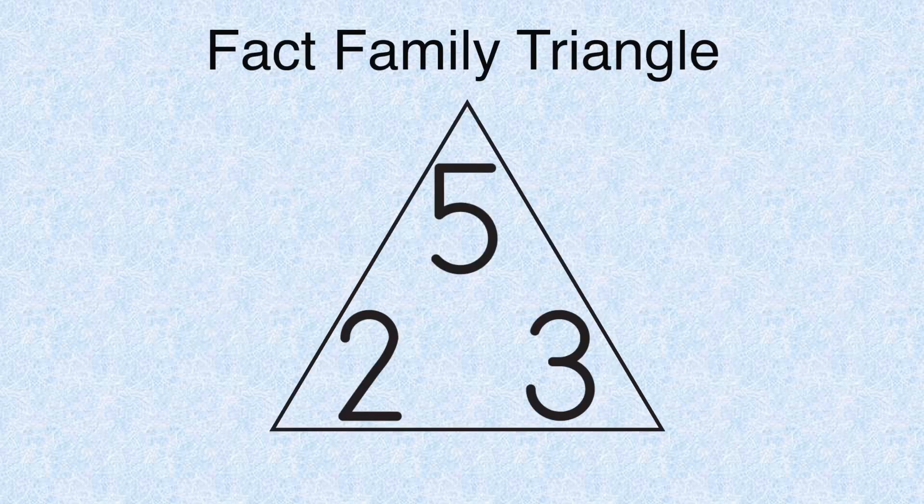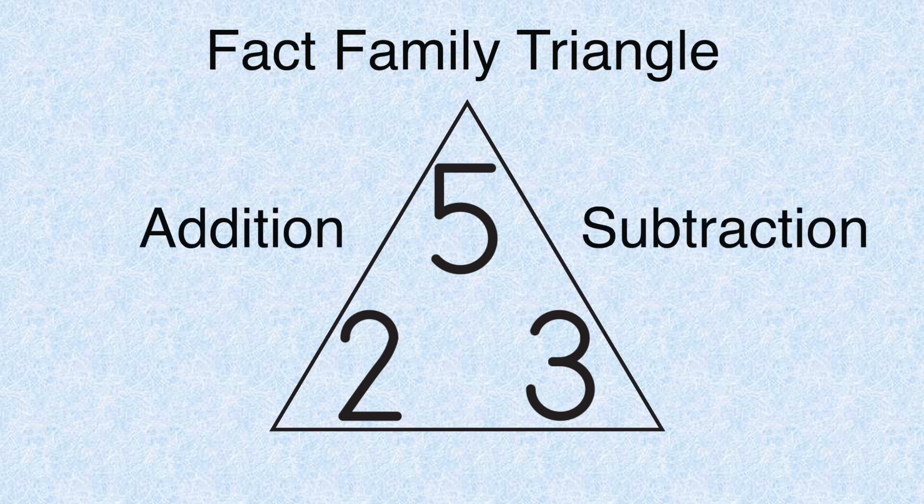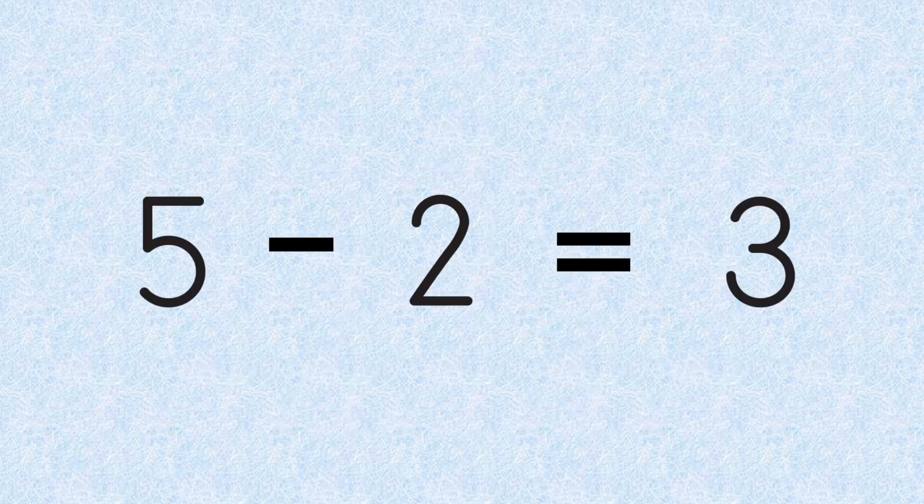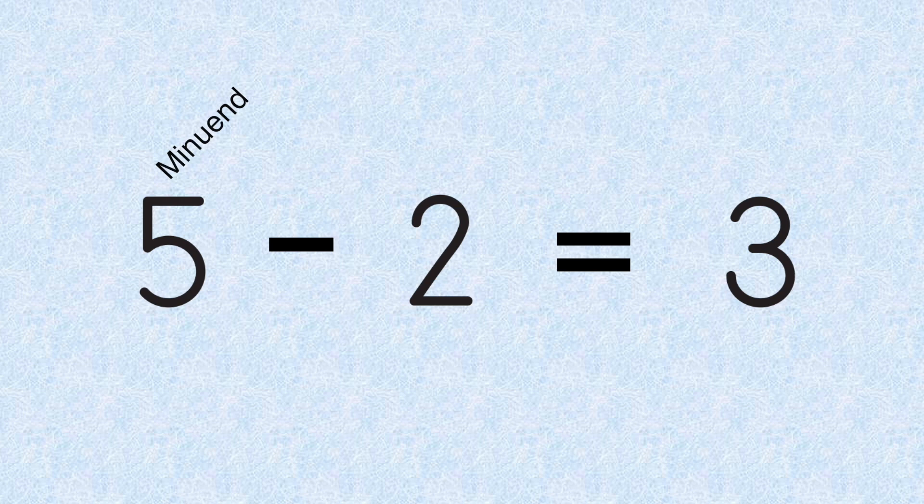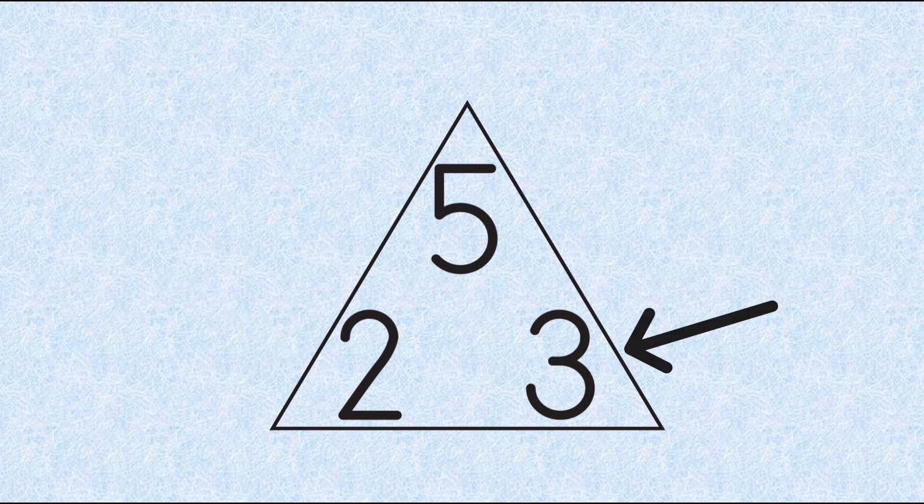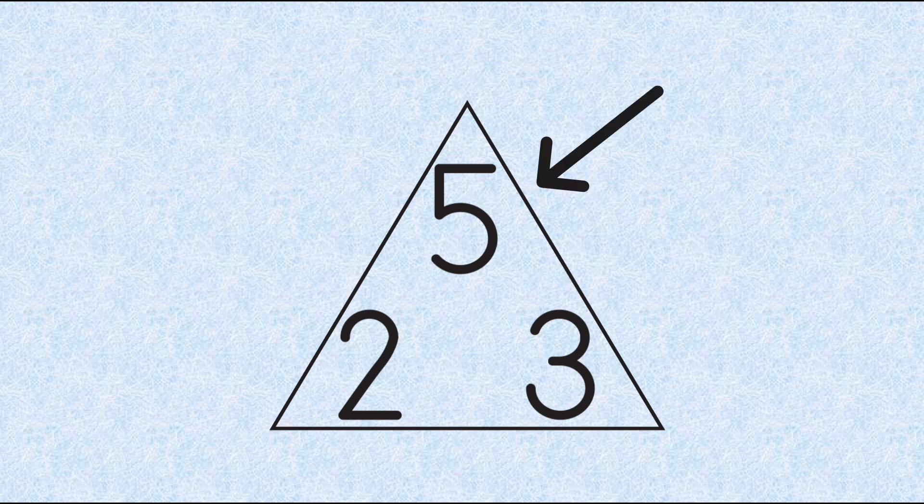So let's review. A fact family triangle is a great way to find addition and subtraction facts for numbers in a fact family. The number of the greatest value goes at the top. In an addition sentence, the numbers we add are called addends and the answer is the sum. When we subtract, the number we subtract from is the minuend, the number we are subtracting is the subtrahend, and the answer is called the difference. To add, we start at the bottom corner of the triangle, go over and up. To subtract, we start at the top corner, go down and over.